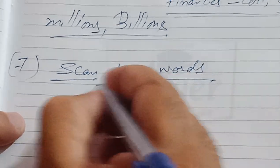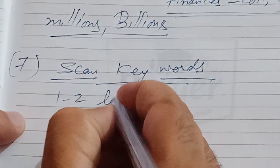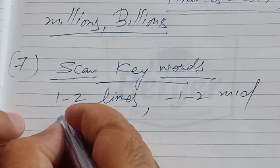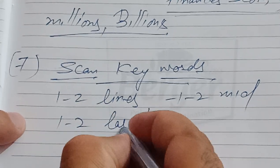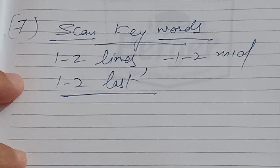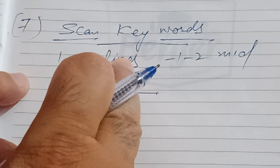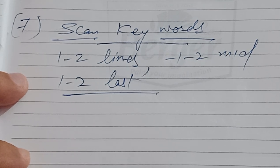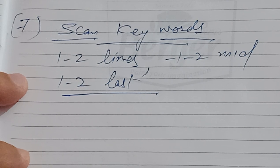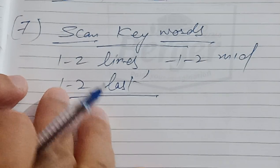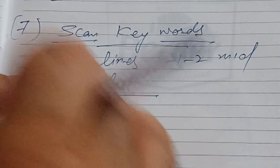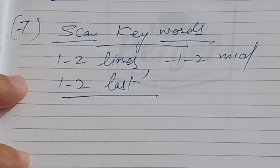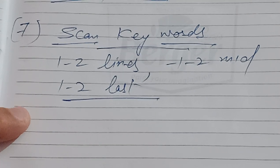The next tip is to scan keywords. You need not read the whole paragraph — just the first one to two lines, one to two lines in the middle, and one to three lines at the end. If the paragraph is small, the first one to two lines are sufficient. But if the paragraph has 10, 11, 12 lines or more, you should scan the information and read cautiously for the general idea.